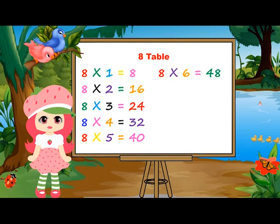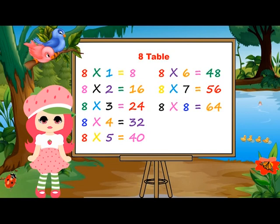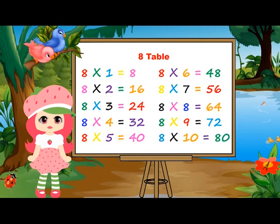8 sixes are 48. 8 sevens are 56. 8 sevens are 56. 8 eights are 64. 8 eights are 64. 8 nines are 72. 8 nines are 72. 8 tens are 80. 8 tens are 80.